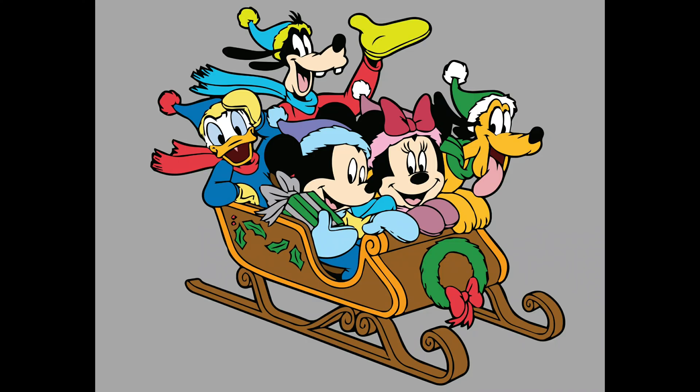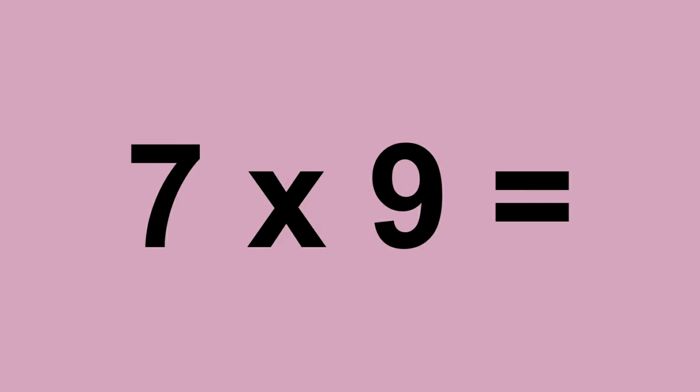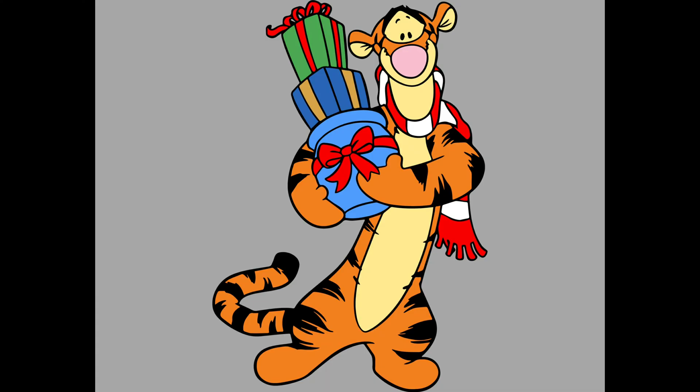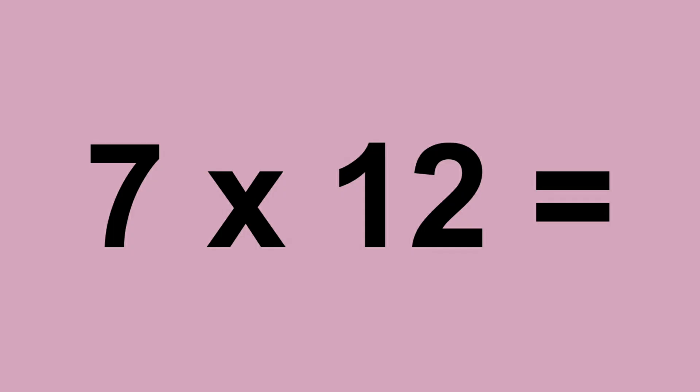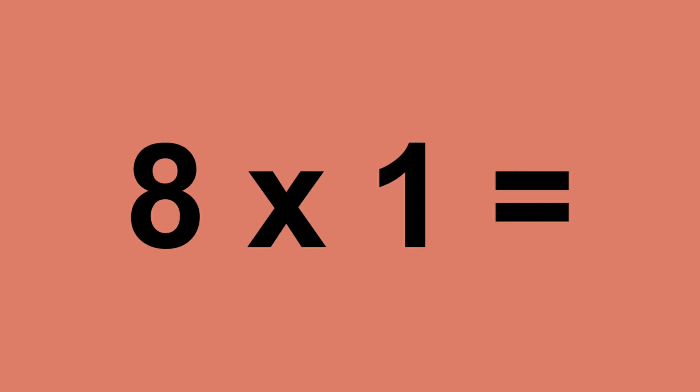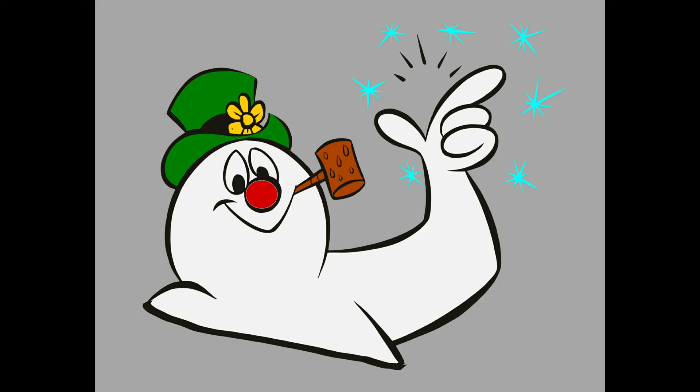Seven times seven equals forty-nine. Seven times eight equals fifty-six. Seven times nine equals sixty-three. Seven times ten equals seventy. Seven times ten equals forty-six. Seven times twelve equals eighty-four.